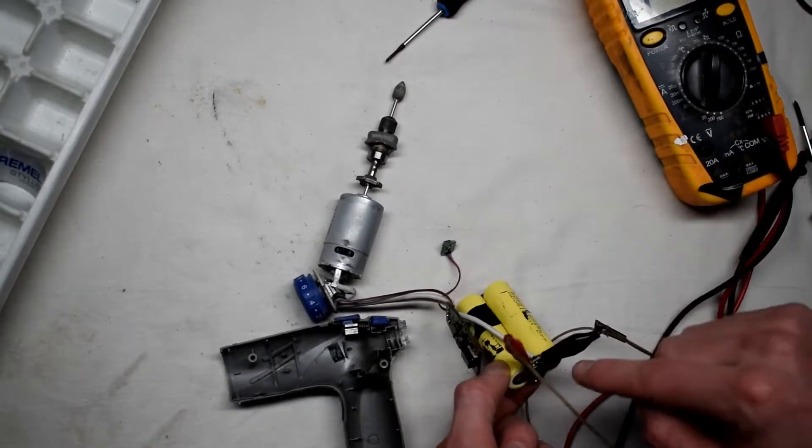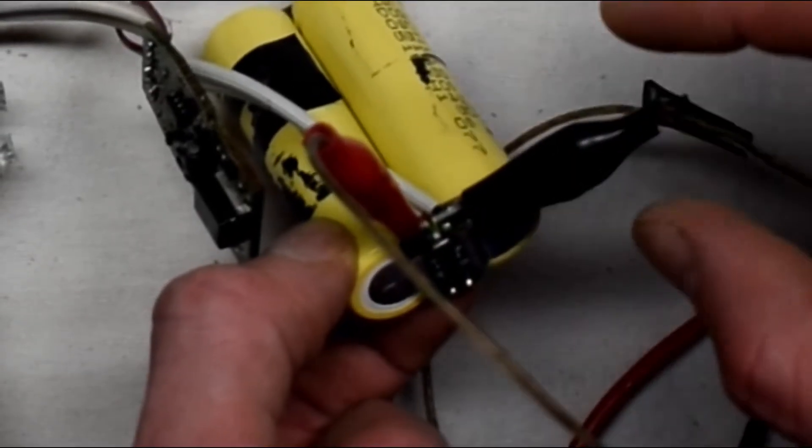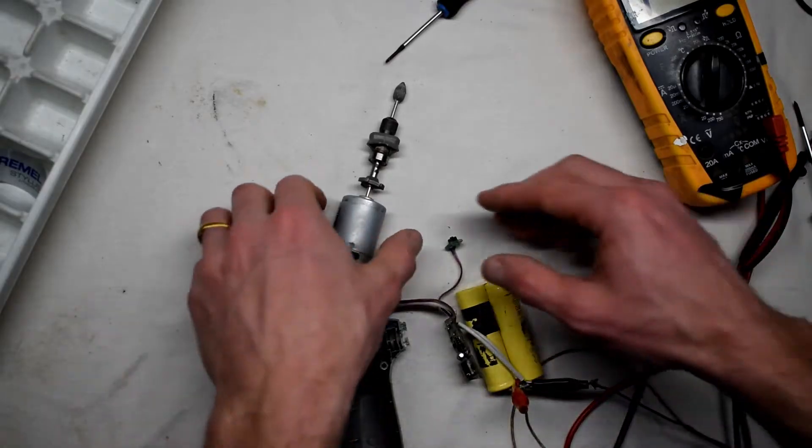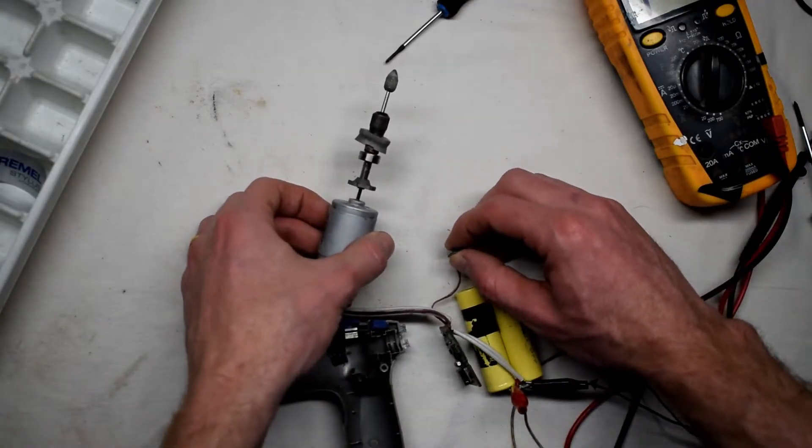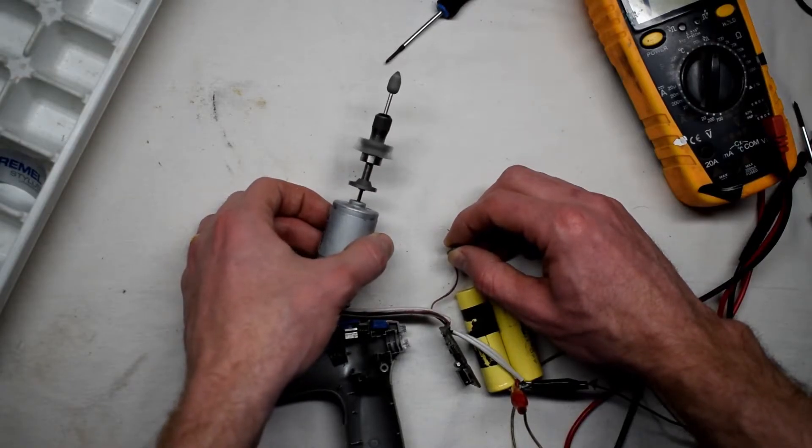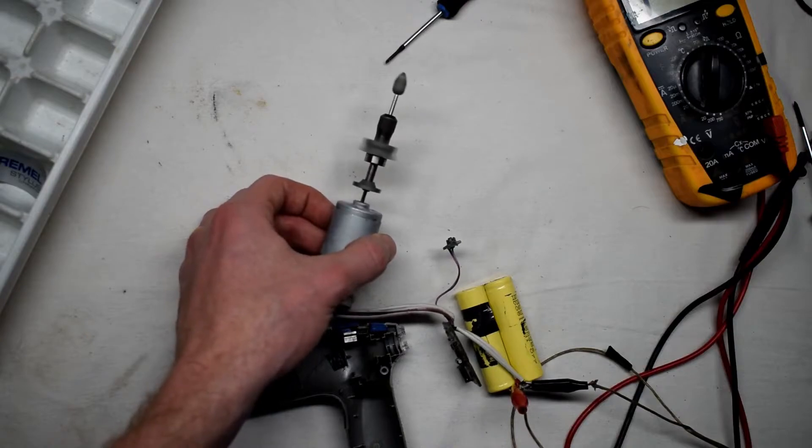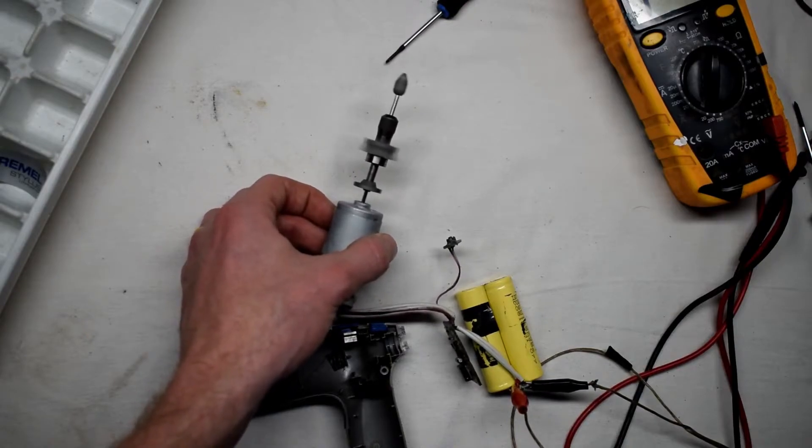So to verify that this is the problem, I connected my own power source—8 volts—to verify if this was the issue. And you can see it turns on, it's spinning there. It's taking about 3 amps at 7 volts.